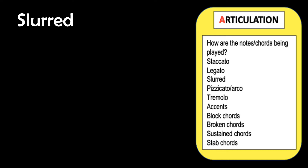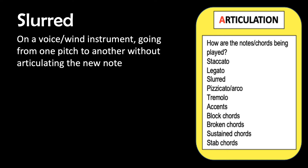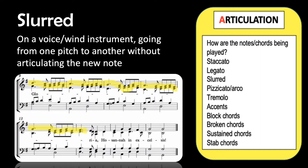Slurred is when, on a voice or a wind instrument, you go from one pitch to the next without articulating the new note. An example of this is in the Christmas carol Ding Dong Merrily on High, when you get to the chorus and you sing the really long Gloria. There are lots and lots of different notes that are highlighted in yellow here on the 'Glor-' of Gloria.